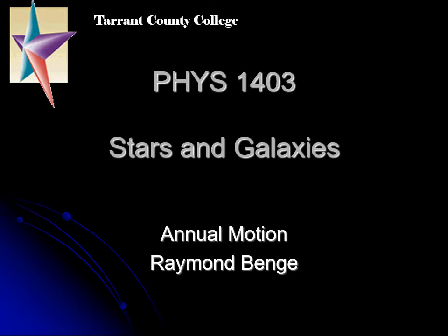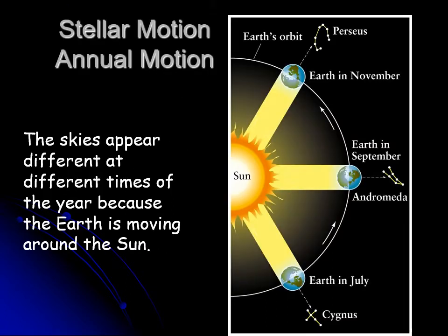The previous slide discussed diurnal motion — the daily rising and setting of stars — but there's another kind of motion. The ancients realized that over time the sky shifts a little bit every day. This is what we call annual motion, because Earth is going around the Sun. During different parts of the year, at the same time of night, you look overhead and see different stars.